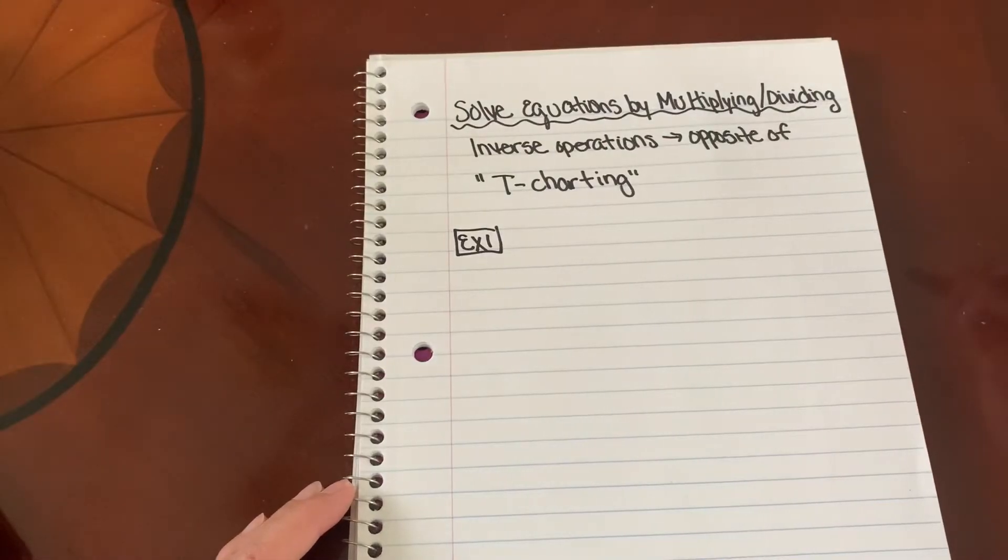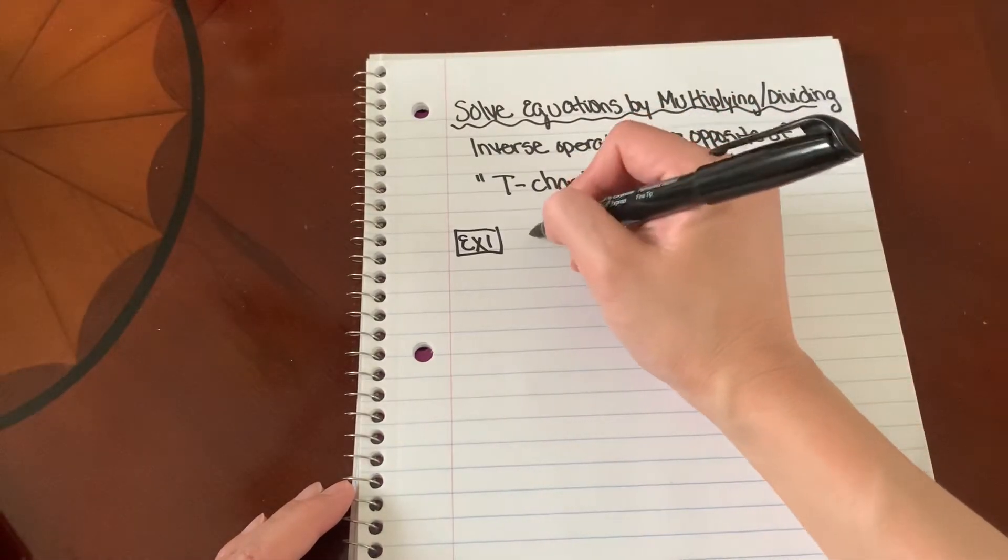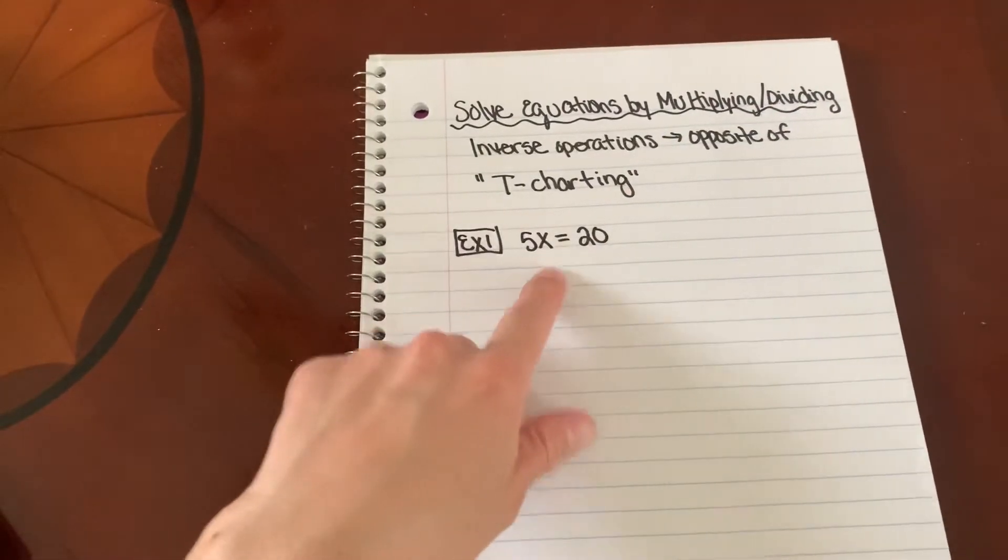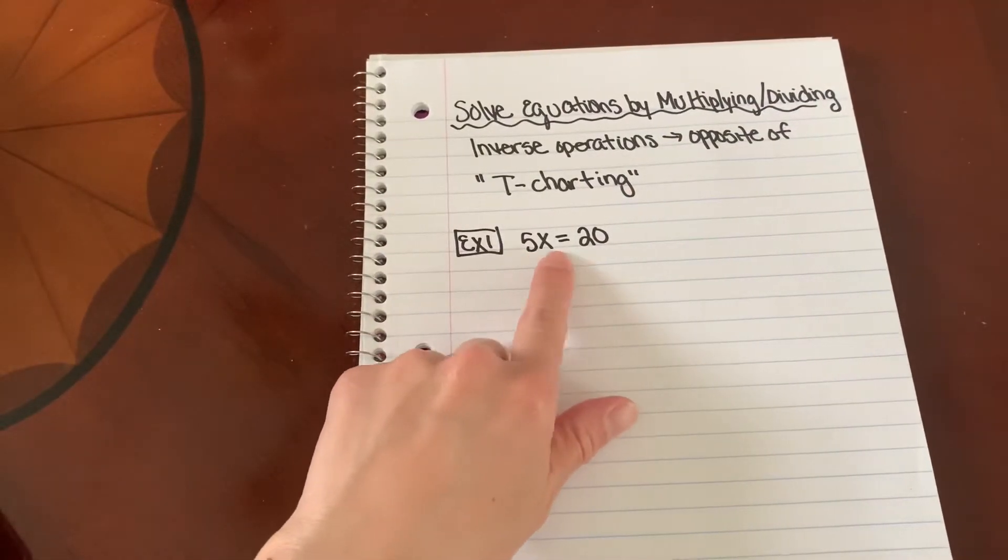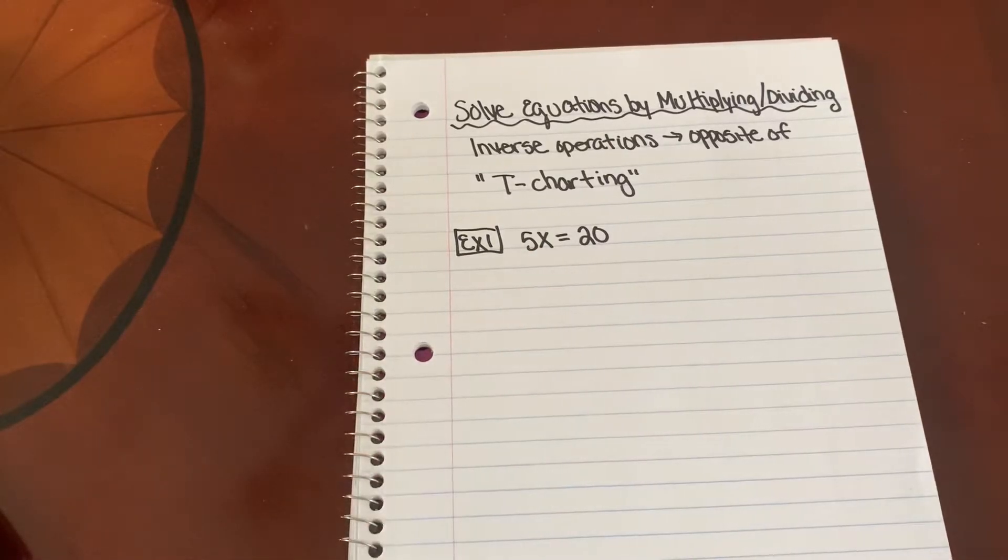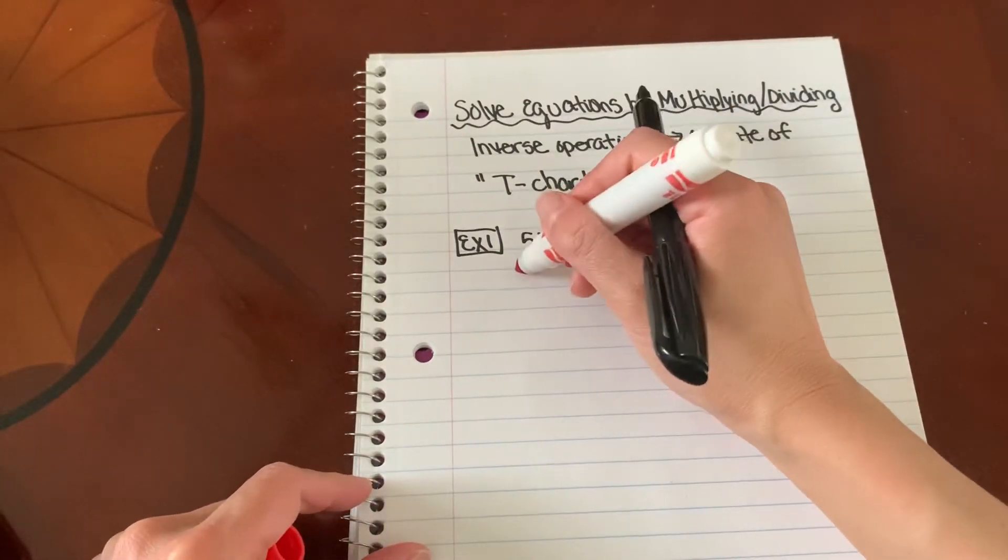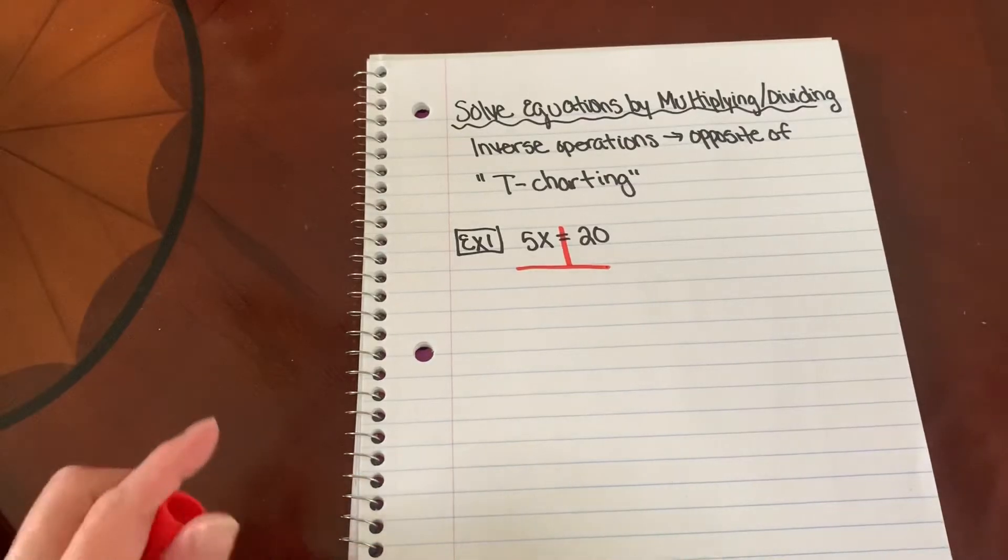So let's take an example. Let's do example one. I have 5x equals 20. Remember, anytime you have a number next to a variable, it's really an invisible multiplication. So we're going to T-chart, just like I mentioned. You're going to draw a line through your equal sign and then make your upside down T.